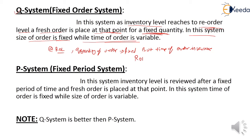What is a reorder level? The reorder level is the point at which inventory is just about to finish. The reorder level is equal to lead time multiplied by the demand rate. Lead time is the time gap between placing an order and the inventory reaching our organization. So: reorder level = lead time × demand rate.